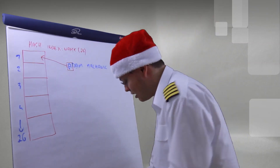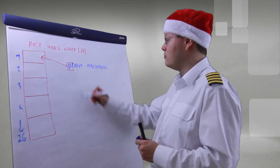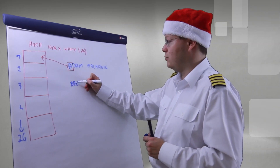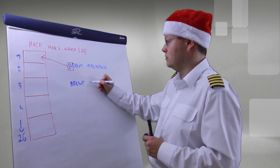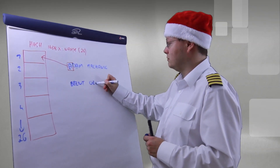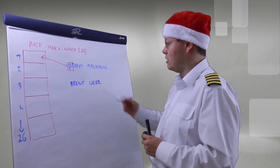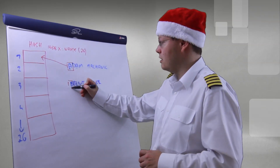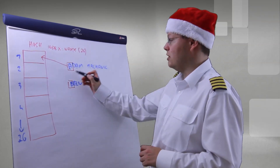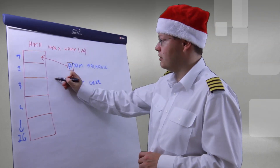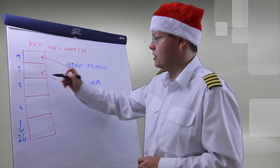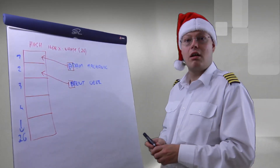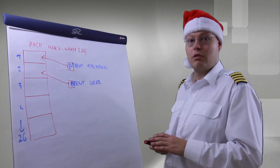The next step, we are inserting another record, our friend Brent Ozar. The first letter is B, which means Brent goes into the second hash bucket. Very easy.